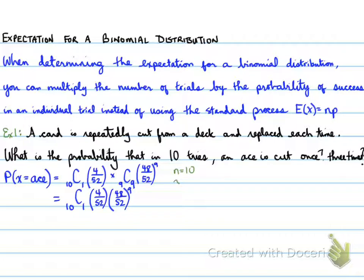Here's the explanation: N is 10 tries, X equals 1 ace, P equals aces over the number of cards. P stands for the successes, and the failures is 1 minus P. So that's how we got these values. When you plug this into the calculator, you get this value.